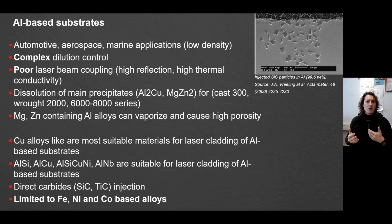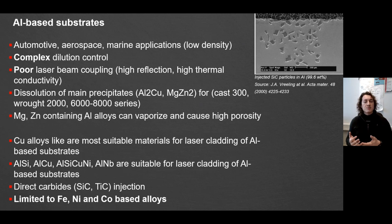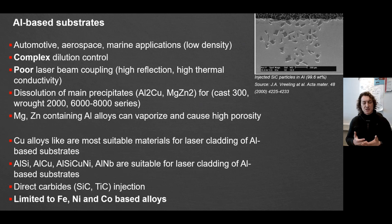Instead of laser cladding, there is also laser alloying, where you simply inject certain hard particles — such as titanium carbides or silicon carbides — into the surface of your aluminium alloys. This process is nowadays well established and is quite commonly used in a number of applications.